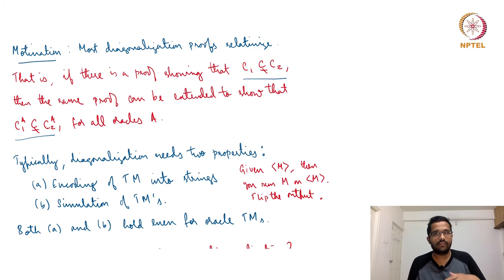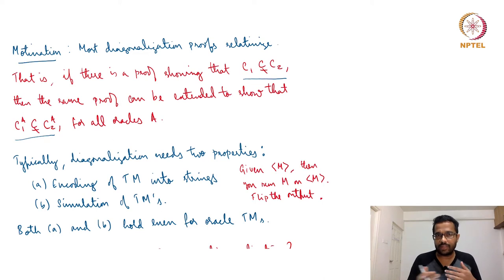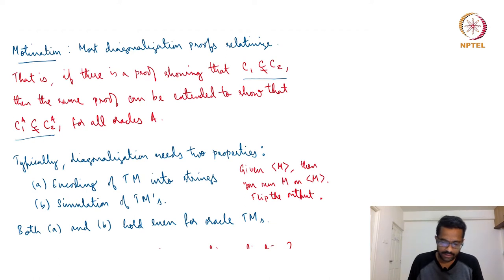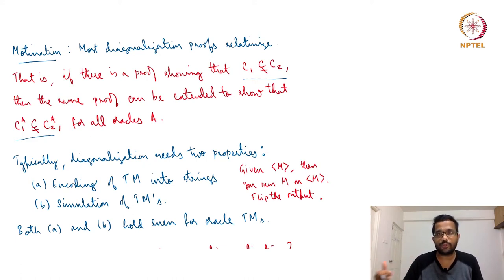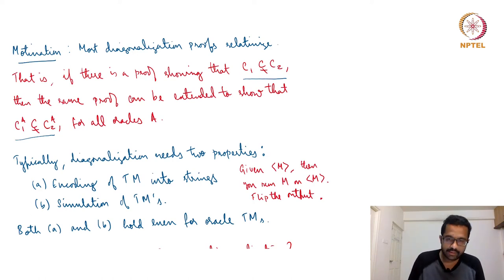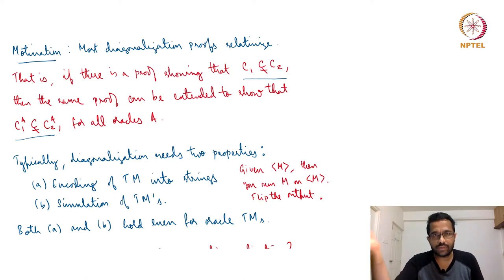There are additional details like how much time or space, then you truncate it and so on. But basically diagonalization relies on interpreting or encoding a Turing machine as a string, and reading that string both as the description of a Turing machine and as input to that machine. The second thing that diagonalization proofs need is the capability to simulate one Turing machine using another Turing machine.